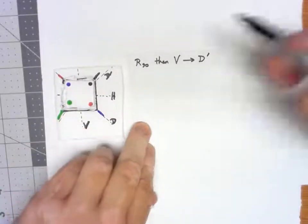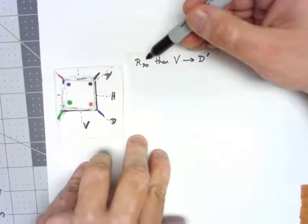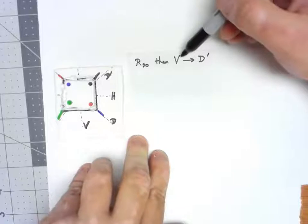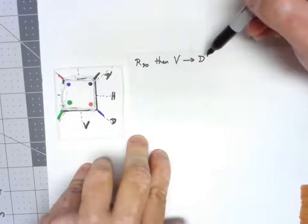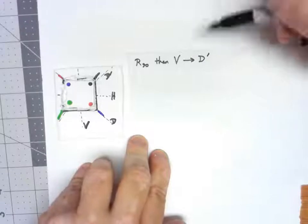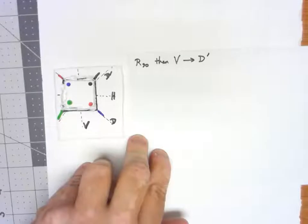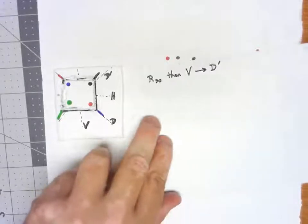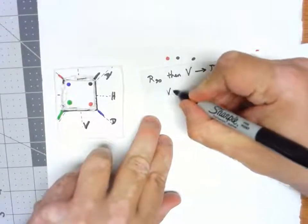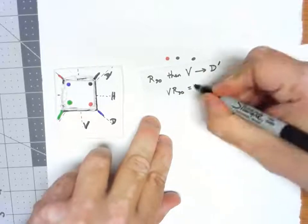The last thing we said with our little square was that if we did a rotation by 90 degrees counterclockwise, then flipped across a vertical line, we ended up with the same thing as a reflection across the off diagonal. To compress this, say it in a more succinct way, we're going to say v r 90 equals d prime.